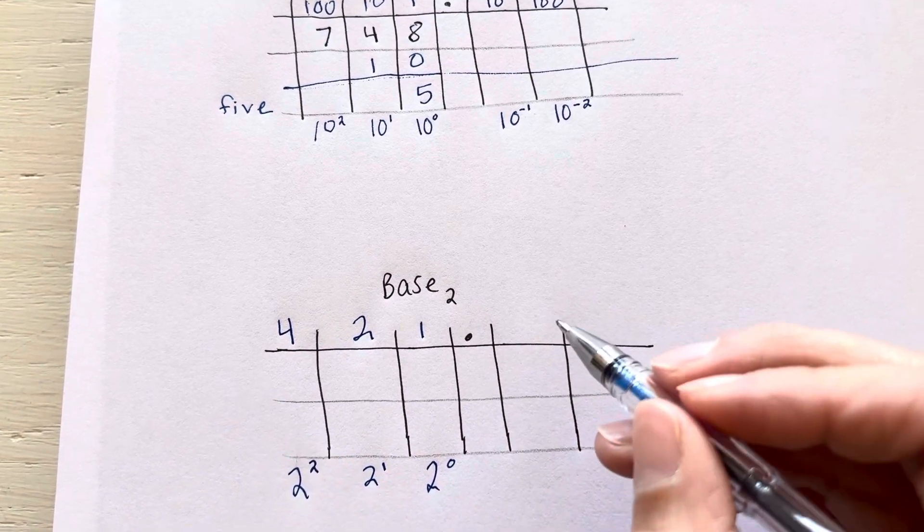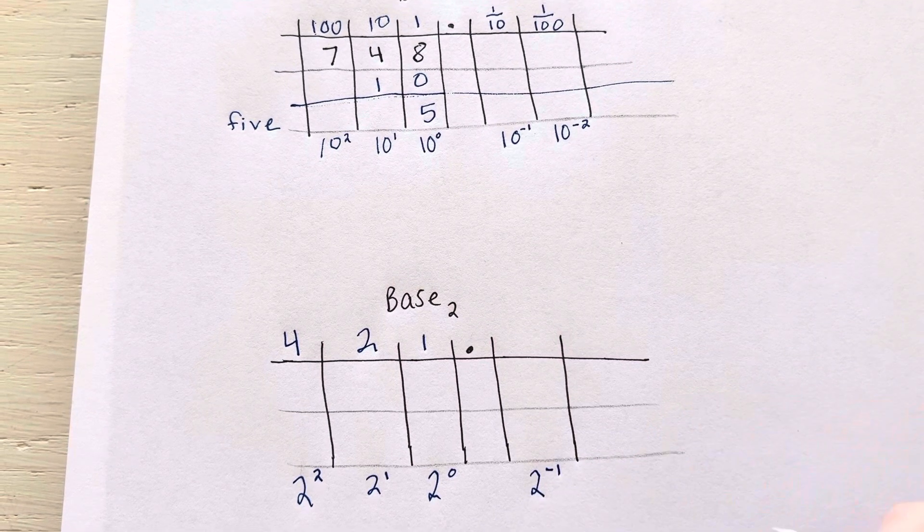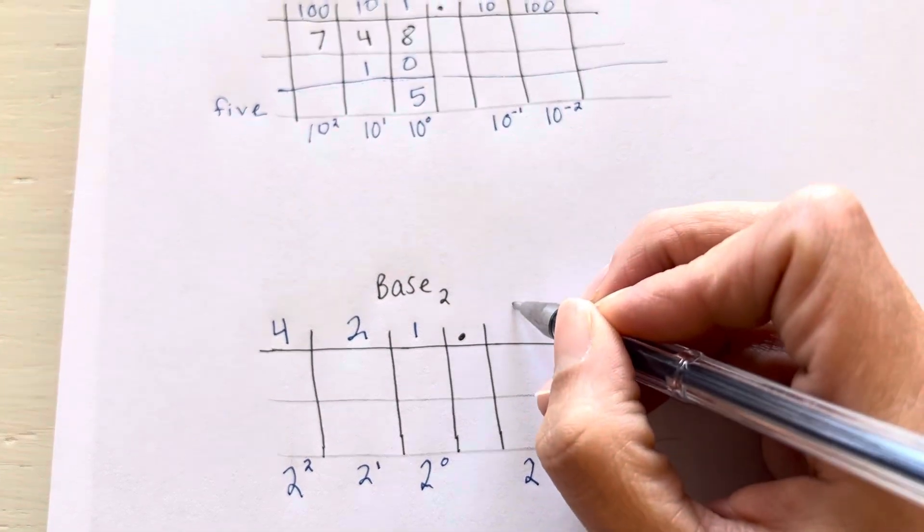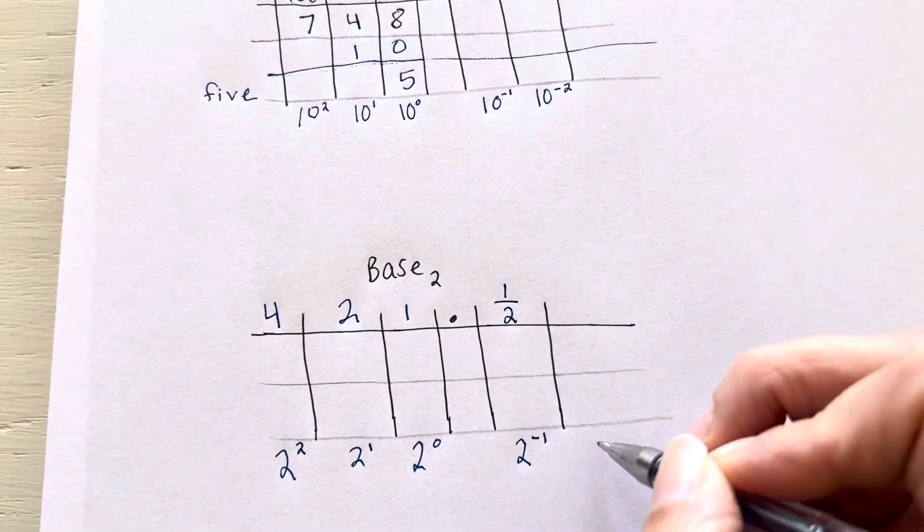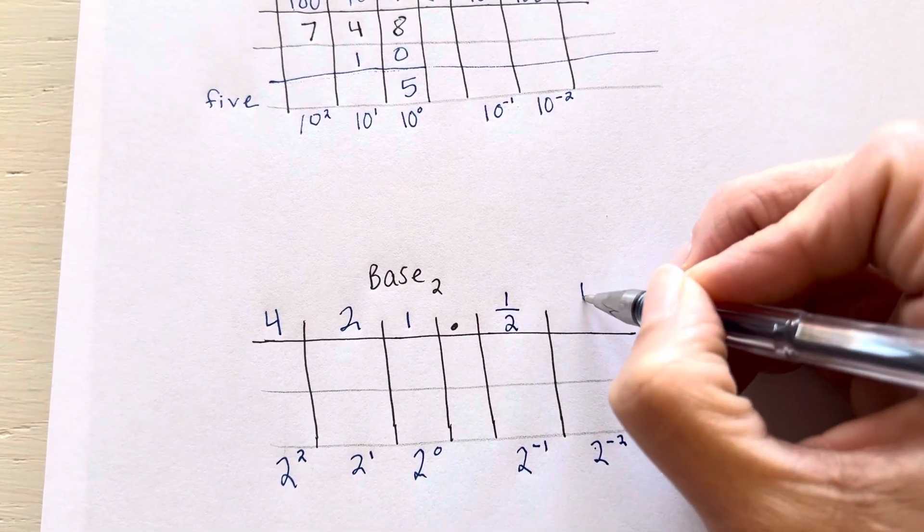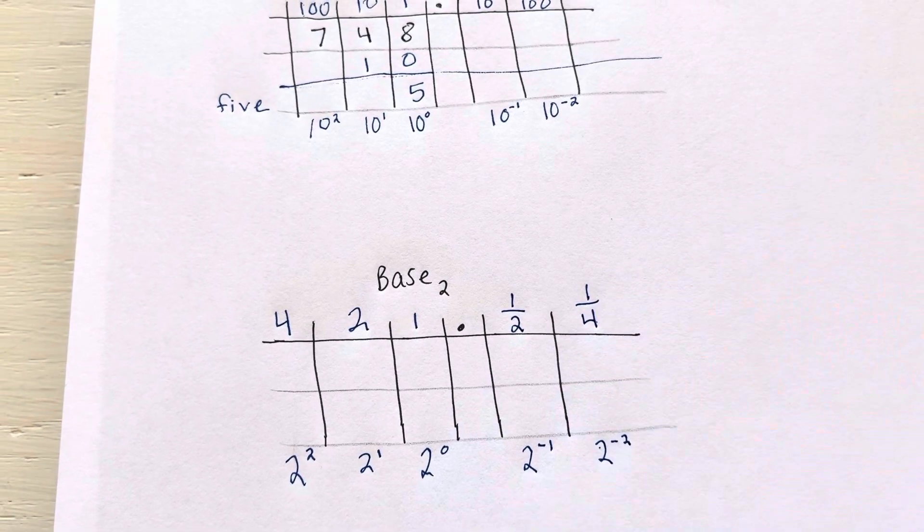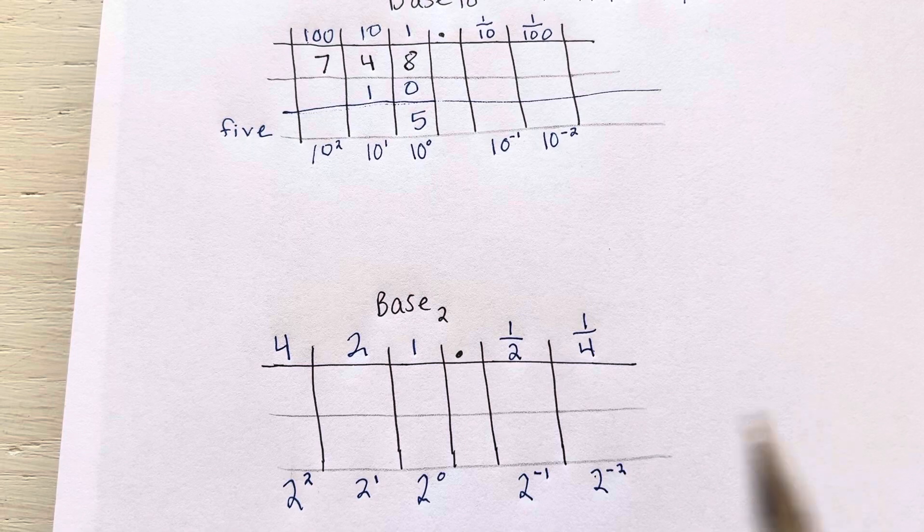We have 2 and it's negative 1 is my exponent, so that's the same as having 1 over 2. And this is 2 with an exponent of negative 2 which is the same as 1 over 4.